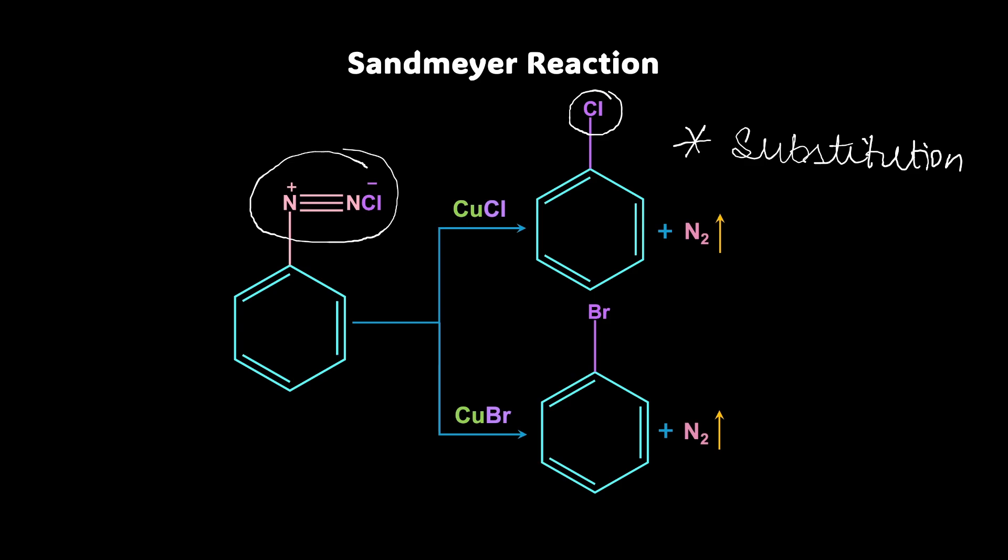Also, we can observe that here we are using copper in the +1 oxidation state. It is cuprous chloride. Cuprous chloride and cuprous bromide for the production of chlorobenzene and bromobenzene respectively acts as a catalyst. That means, CuCl and CuBr, they are not consumed in the course of reaction.